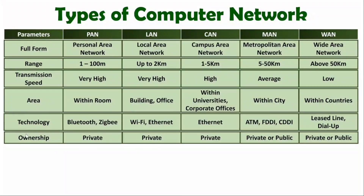When it comes to ownership, Personal Area Network ownership is private. Local Area Network ownership is also private. Campus Area Network ownership belongs to those universities and corporate offices, so it is also private. Metropolitan Area Network ownership may be private or public, depending on which company is providing it. And Wide Area Network ownership can also be public or private, depending on which company owns that network.